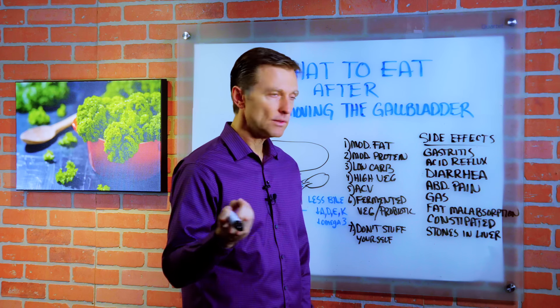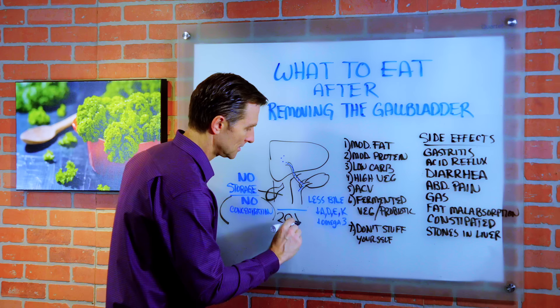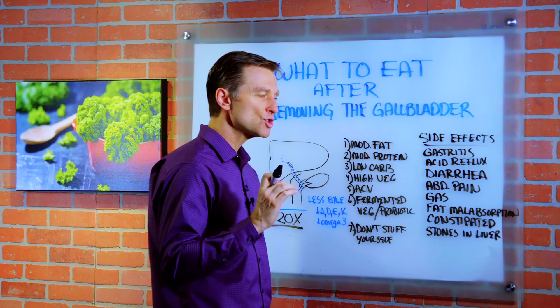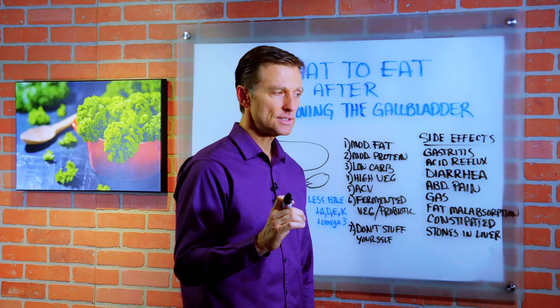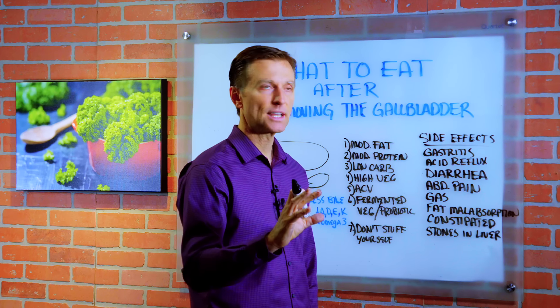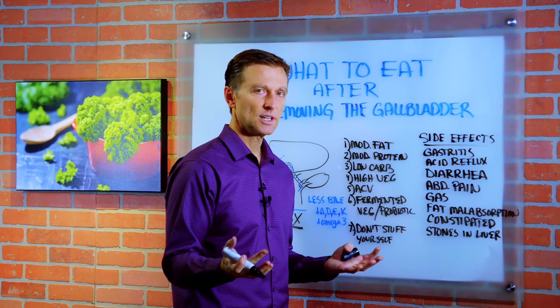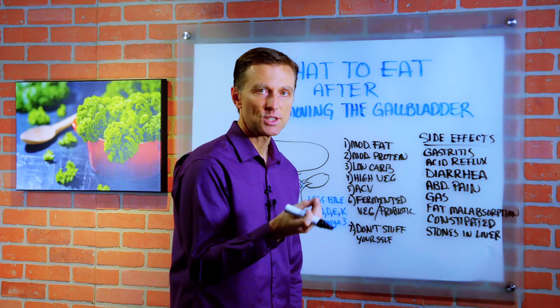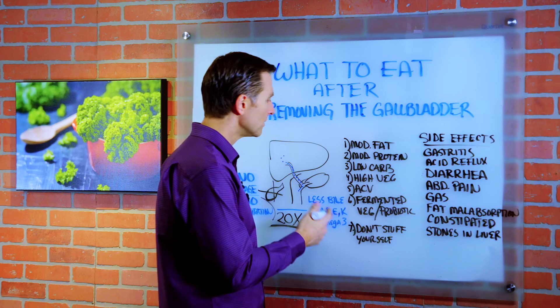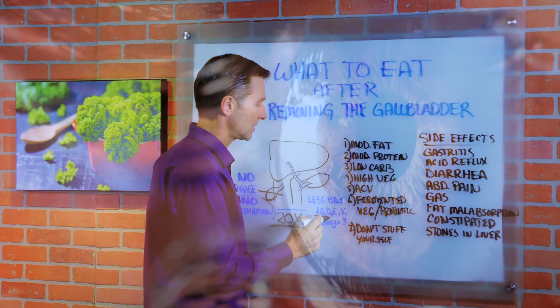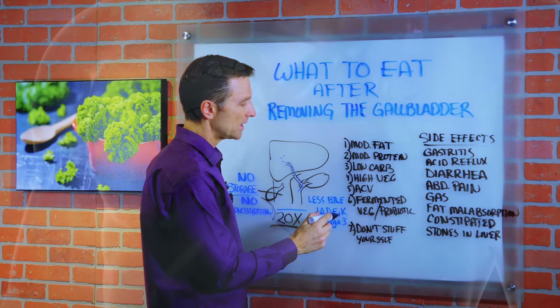And one point about that is that when you don't have the gallbladder, you don't have the ability to concentrate the bile. In the gallbladder, you're basically concentrating bile up to 20 times, not 20%, 20x. So that bile is so super concentrated, it doesn't take much to be able to create the full digestive effect that you need. So you don't have this concentration anymore of bile. So you're going to have this diluted bile in smaller amounts.